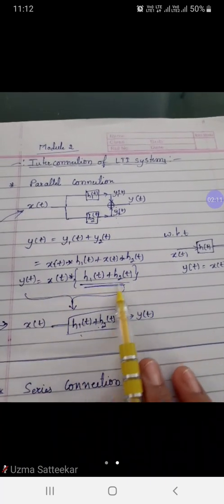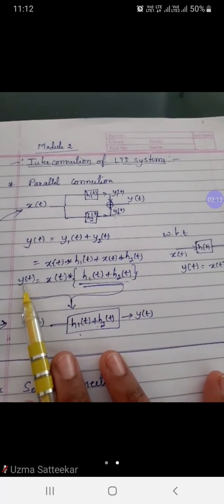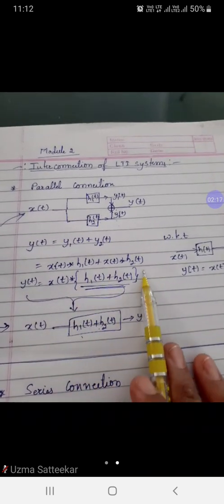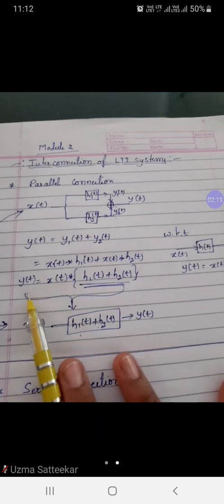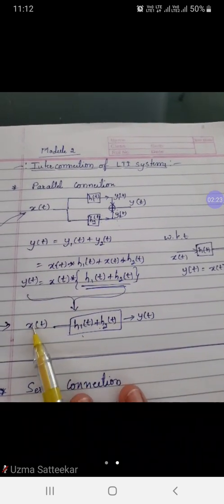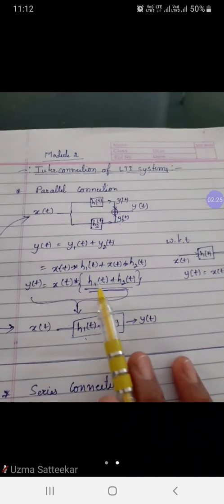Now, this is the output—one signal convolution, and the remaining is considered as one signal. So we can represent this in the form of a block with x as the input, y as the output, and whatever is in the bracket as the impulse response.